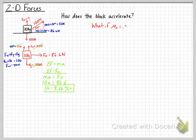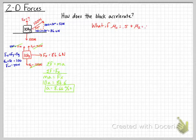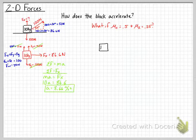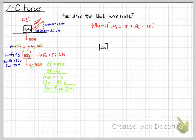Now the next question is: what if the coefficient of static friction mu sub s is 0.5 and the coefficient of kinetic friction is 0.25? Previously we had no friction, so now we're going to add friction in and see how that affects the object's motion.